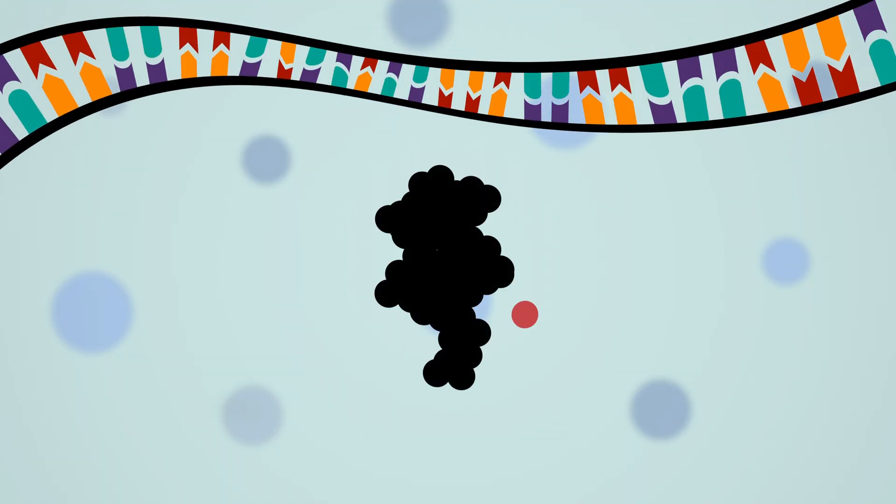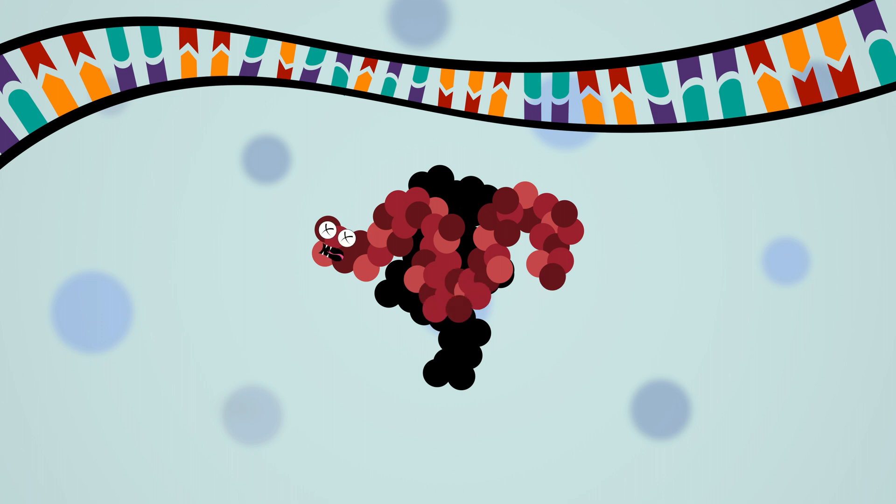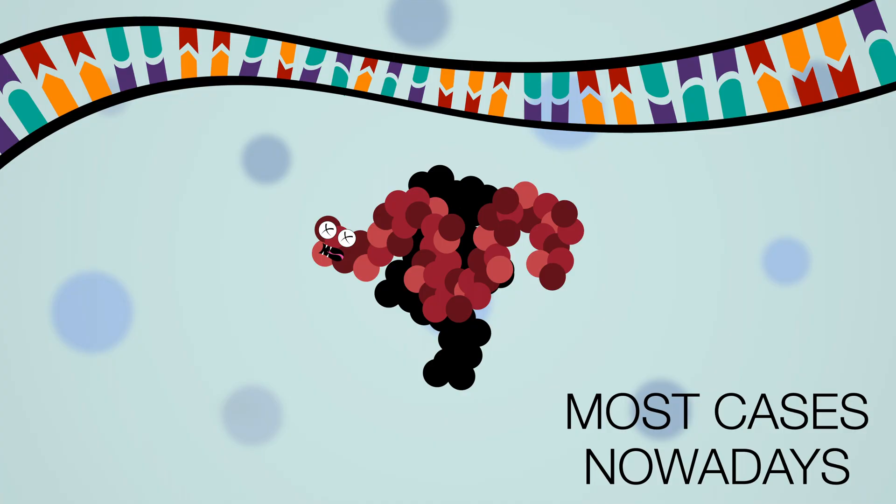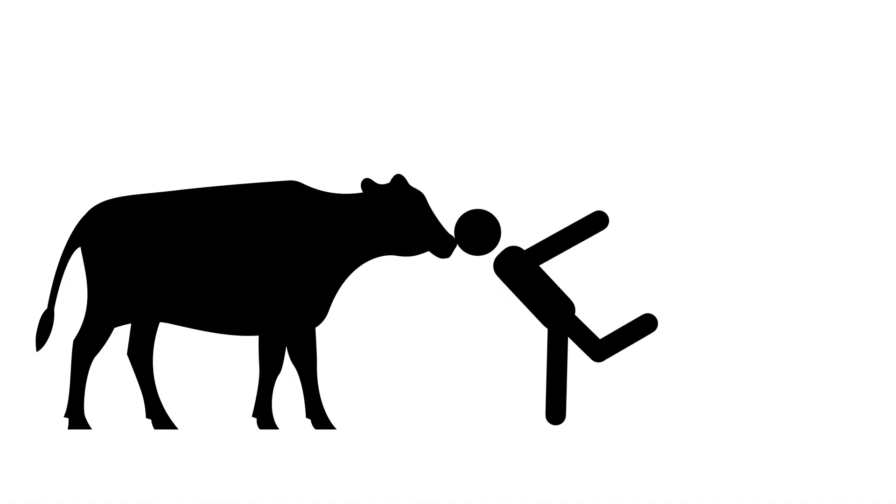We've already figured out that in most cases, at least nowadays, you can get the disease due to spontaneous mutations. However, there are some other ways. Like touching diseased animals, for example. Or eating their meat. Even well-cooked meat.